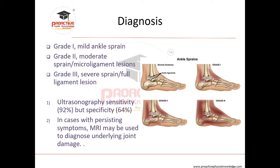Grade one is a very mild ankle sprain, grade two is moderate, and grade three is severe with full ligament lesion. On anterior drawer test: up to 5mm translation is grade one, 5–10mm is grade two, and above 10mm is grade three. Ultrasonography is sensitive for initial lateral ankle sprain — ultrasound has 64% specificity and 92% sensitivity. If persistent symptoms require further assessment of soft tissue, MRI should be pursued.